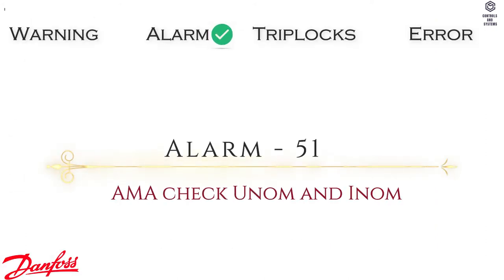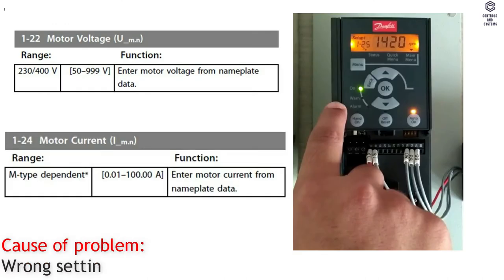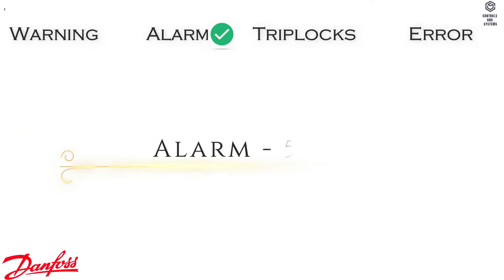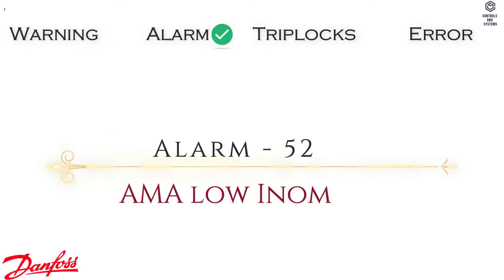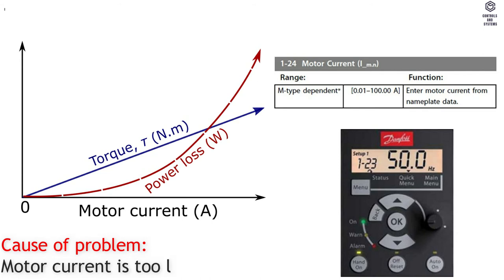Alarm 51: AMA Check Un-Om and Un-Om. Cause of Problem — wrong setting for motor voltage and/or motor current. Alarm 52: AMA Low Un-Om. Cause of Problem — motor current is too low. Check settings.